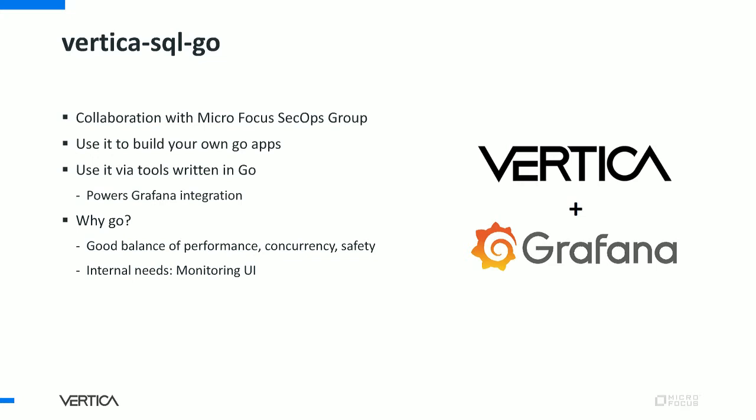We also have our client for Golang, called Vertica SQL Go. This is a very similar story just in a different programming language. Vertica SQL Go began as a collaboration with the Micro Focus SecOps group, who builds Micro Focus's security products, some of which use Vertica internally to provide analytics. You can use it to build your own apps in the Go programming language, or use it via tools written in Go. Most notably, we have our Grafana integration, which we'll talk about more later, that leverages this new client to provide Grafana visualizations for Vertica data.